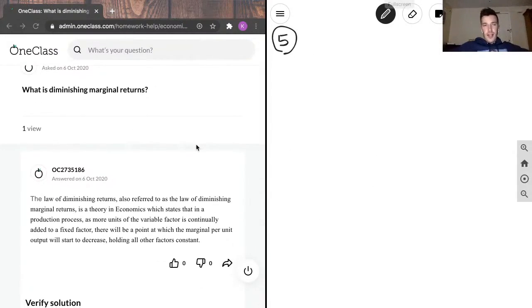What a junior tutor has written as the answer is that the law of diminishing returns, also referred to as the law of diminishing marginal returns, is a theory in economics which states that in the production process, as more units of the variable factor is continually added to a fixed factor, there will be a point at which the marginal per unit output will start to decrease, holding all other factors constant.